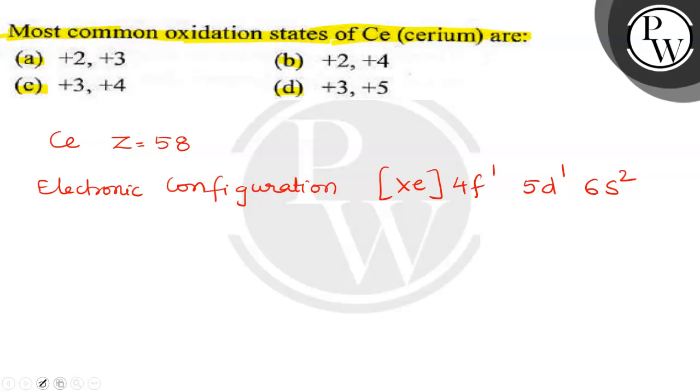So if it is losing outermost two or three electrons here - see, this is outermost two and penultimate shell one electron - if it loses, it shows +3 oxidation state.